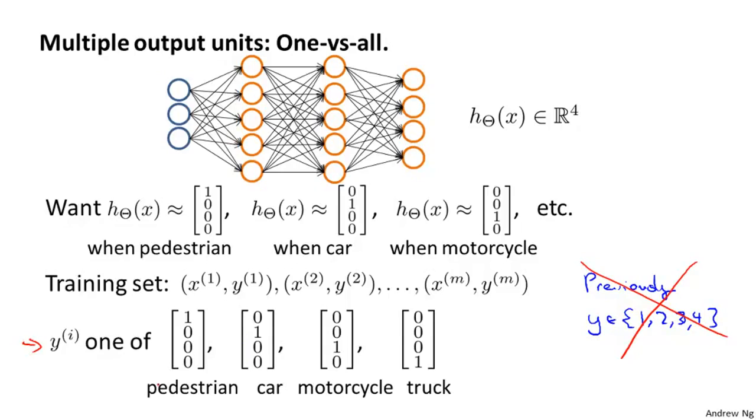Namely, y i will be either 1000, or 0100, or 0010, or 0001, depending on what the corresponding image x i is. And so one training example will be one pair x i comma y i, where x i is an image with one of the four objects, and y i will be one of these vectors.